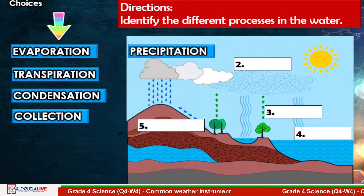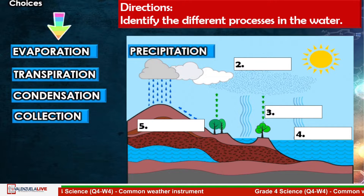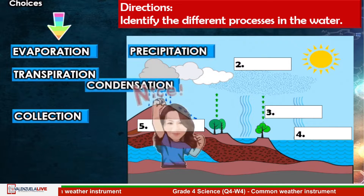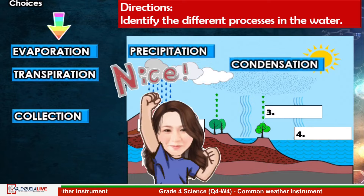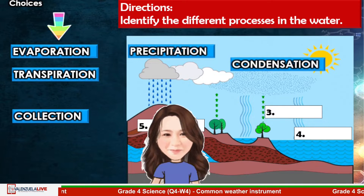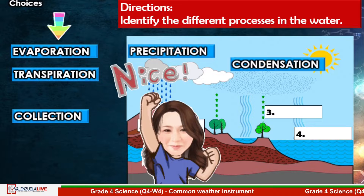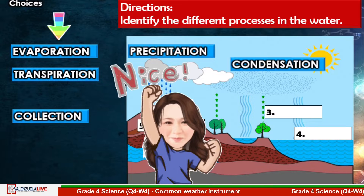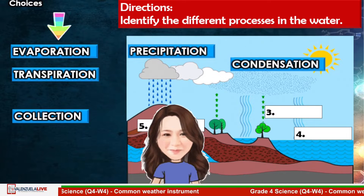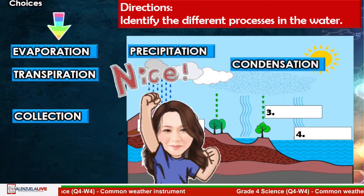Number two: It is a process by which water vapor in the air is changed into liquid water. Nice answer! The answer is Condensation. Let's have the next number.